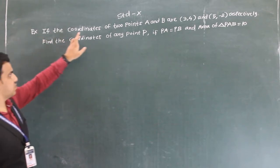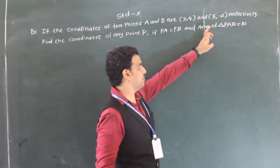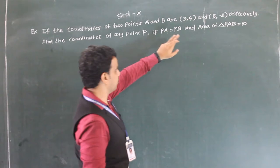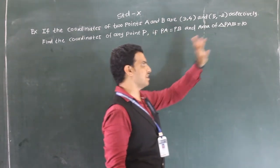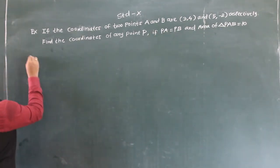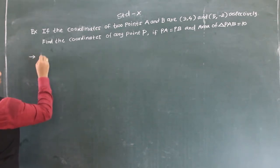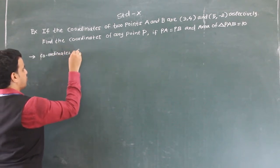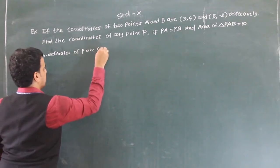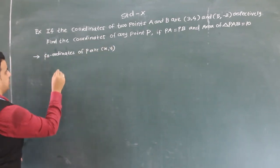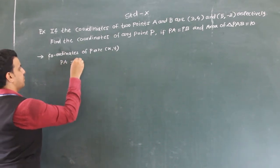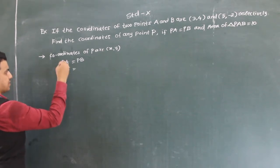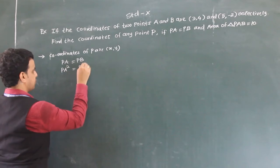Next example: the coordinates of two points A and B are (3, 4) and (5, -2) respectively. Find the coordinates of any point P if PA = PB and area of triangle PAB is 10 square units. Let coordinates of point P be (x, y). Since PA = PB, these two distances are equal.